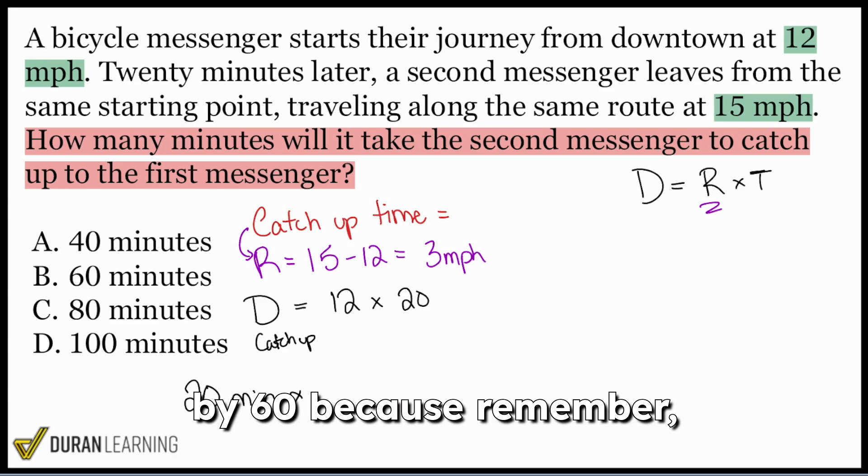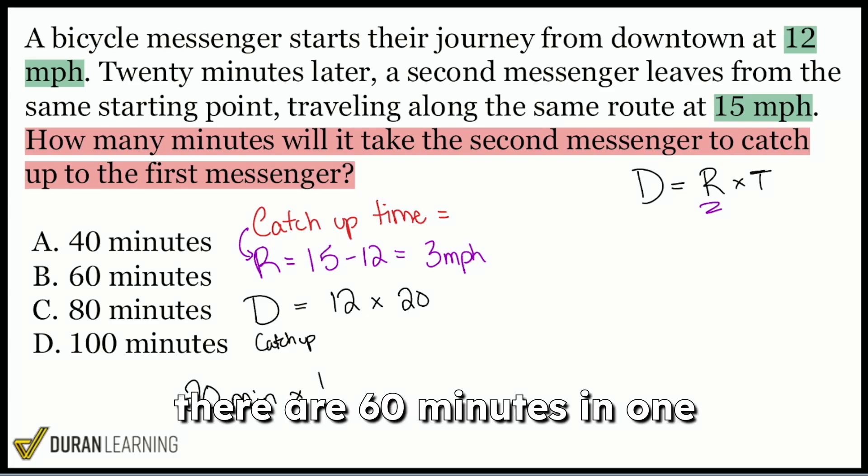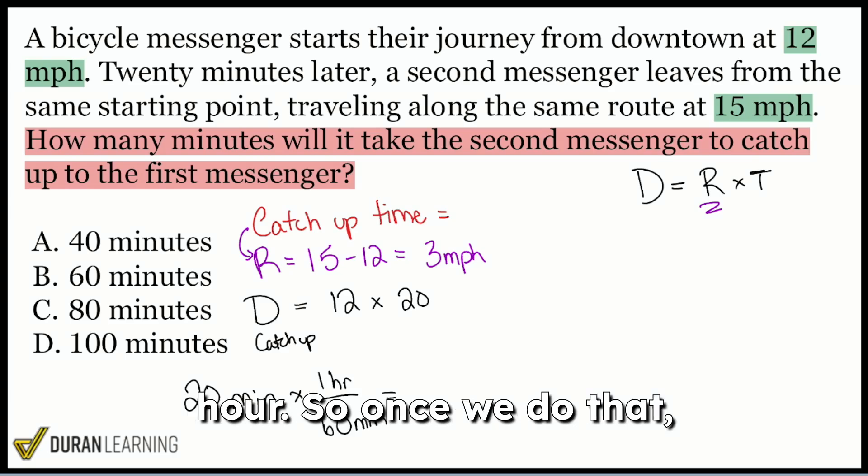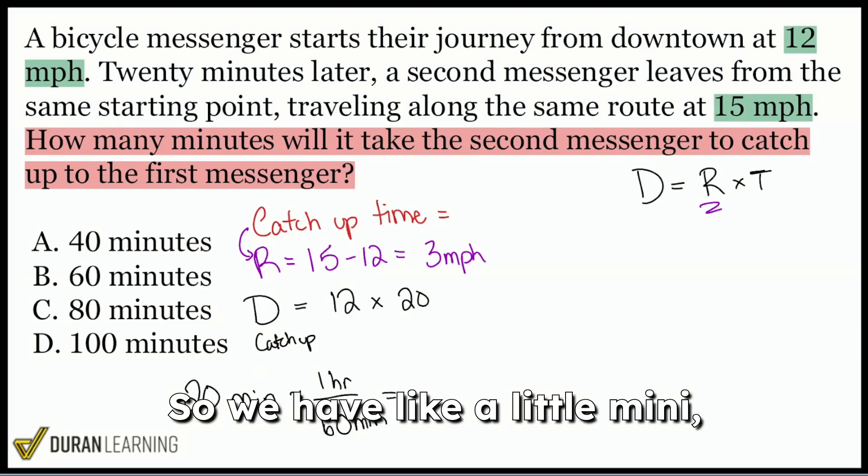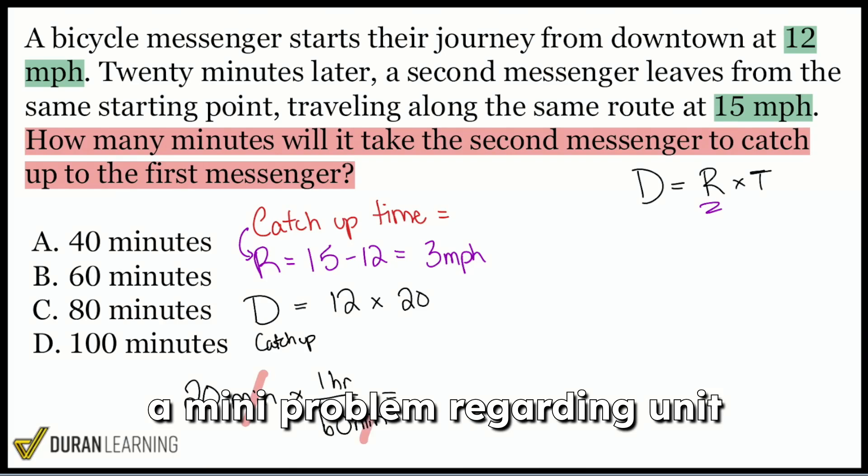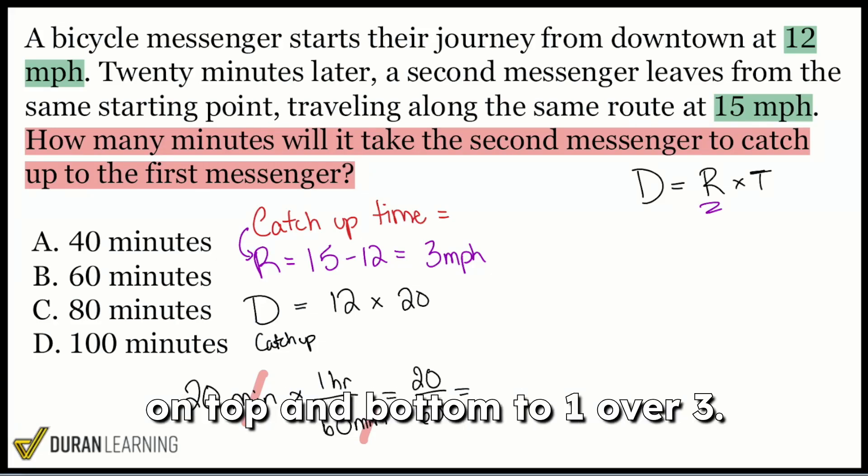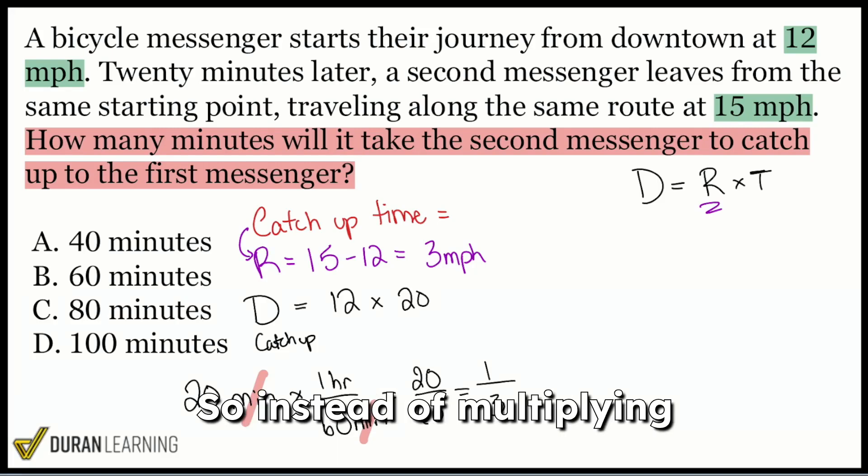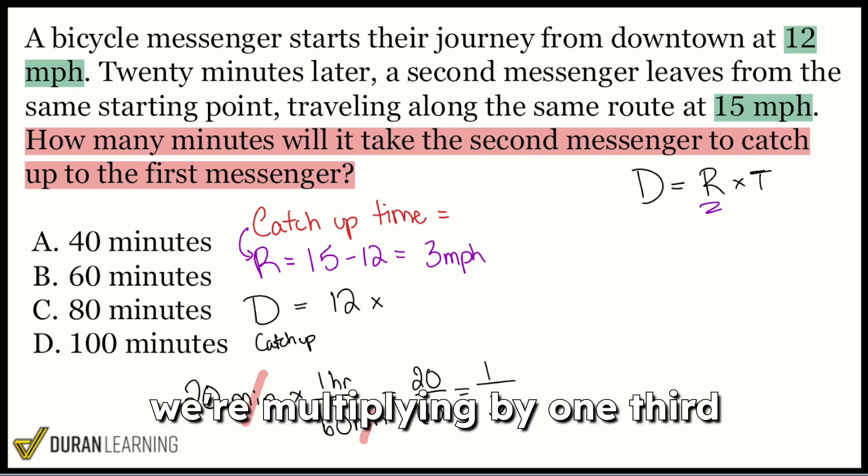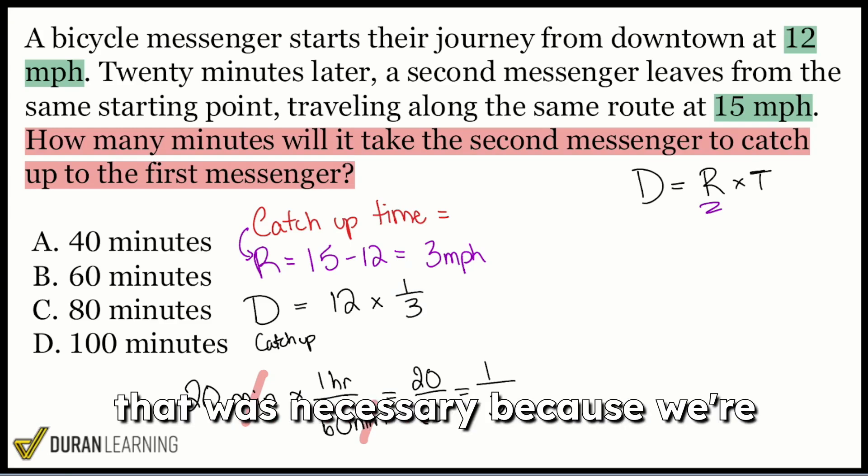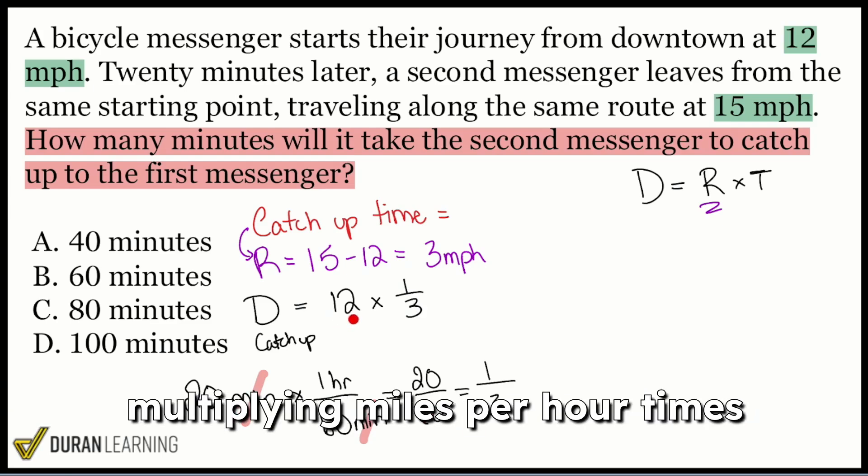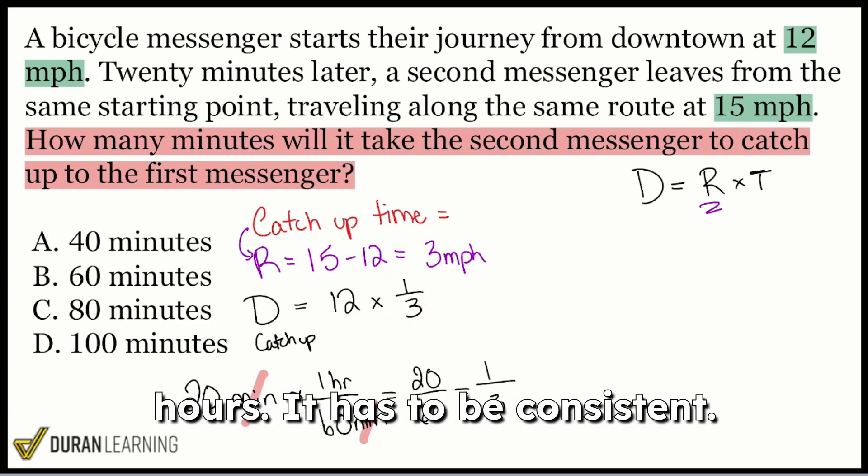Well, we will go ahead and divide by 60 because remember, there are 60 minutes in one hour. So once we do that, we see that the minutes cancel out. So we have a little mini problem regarding unit conversions within this distance rate time question. And that's what makes it a slight challenge. But once we do that, we get 20 over 60, which simplifies dividing by 20 on top and bottom to one over three. So instead of multiplying by 20 minutes, we're multiplying by one third of an hour. And again, that was necessary because we're multiplying miles per hour times hours. It has to be consistent.